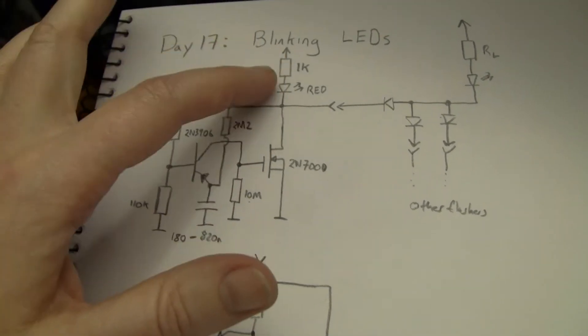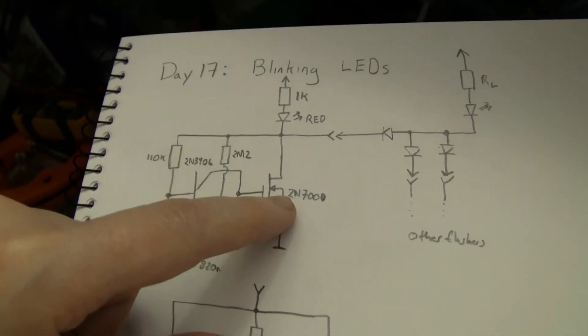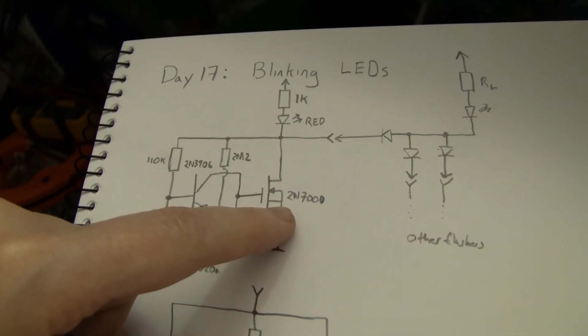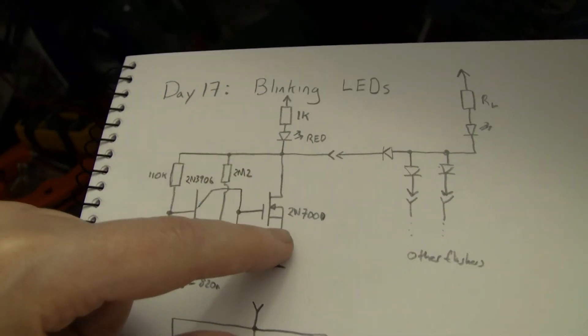For bigger loads you can actually obviously run bulbs, not only LEDs. The 2N7000 I think is half an amp and an amp pulse or something like that. I'll have a look at the datasheet, but you can use much larger MOSFETs as well.